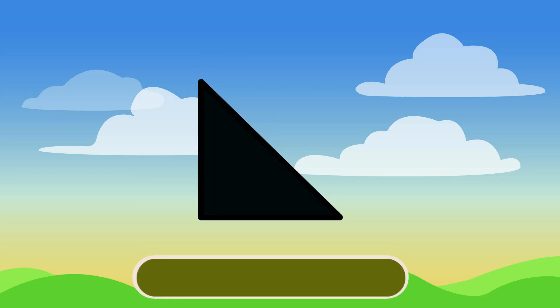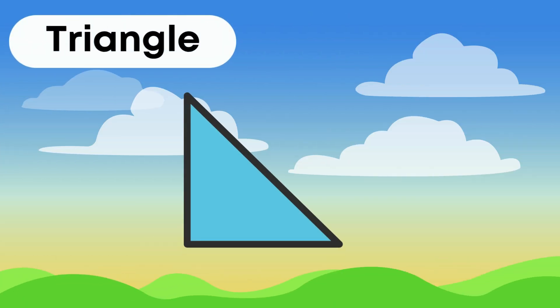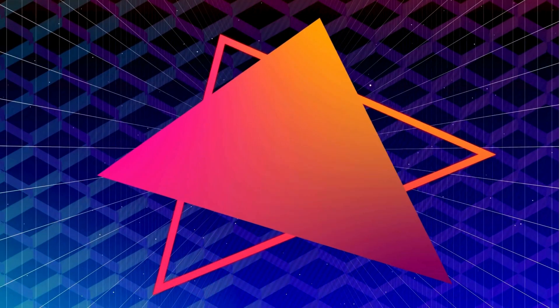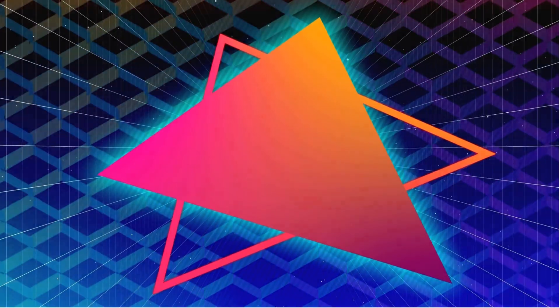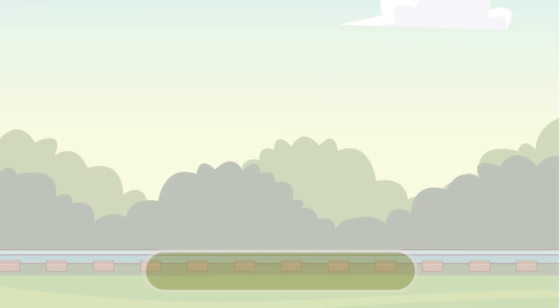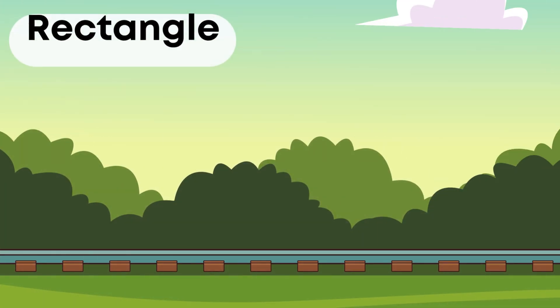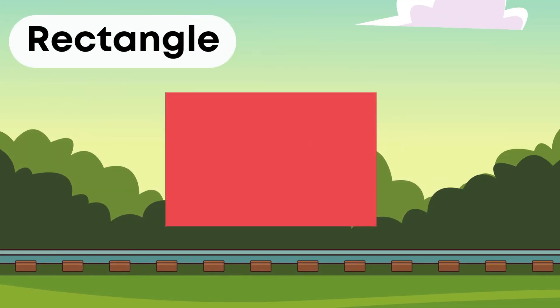Guess the name of the shape. This is a triangle. Triangle. Guess the name of the shape. This is a rectangle. Rectangle.